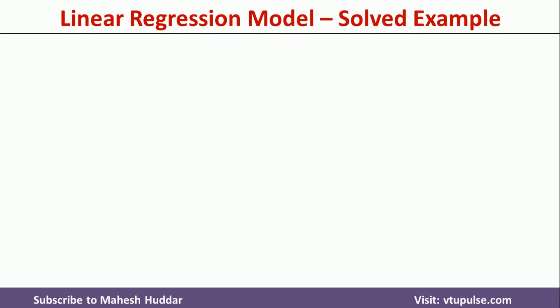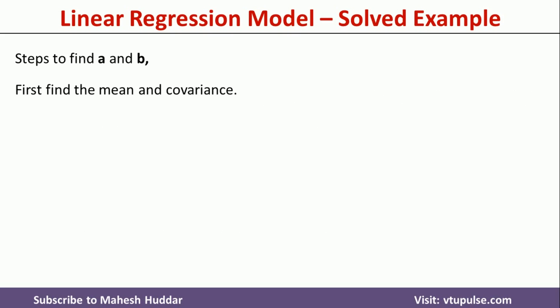Now, the question is how to find the values of a and b. To find the values of a and b, first we need to find the mean and covariance of the given data set. The mean and covariance are calculated using the following formulas.